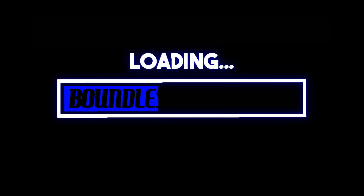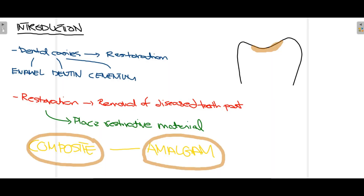Firstly, we have a tooth structure. As you can see in this diagram, there is a tooth, but when you consume excessive sugars and when your oral hygiene is not proper, there is dental caries initiation anywhere in the tooth. This part shown in the diagram is where dental caries is present. When dental caries is present, some restoration is required — the diseased part of the tooth has to be removed, and when it is removed, restorative material has to be placed so that the continuity of the tooth is restored.